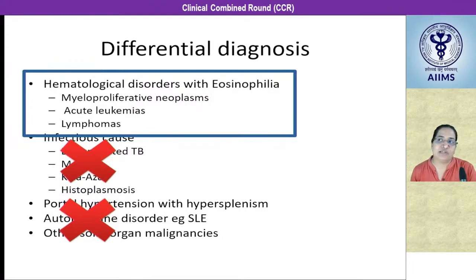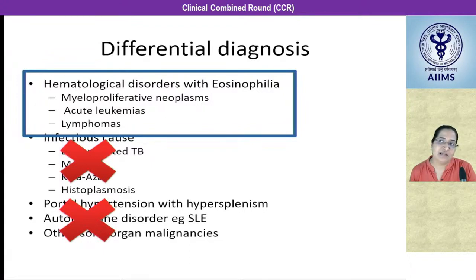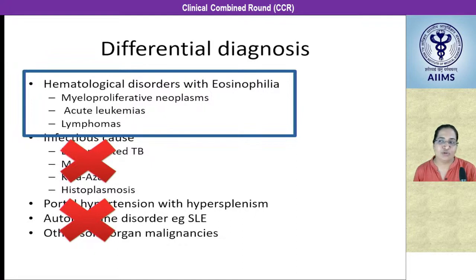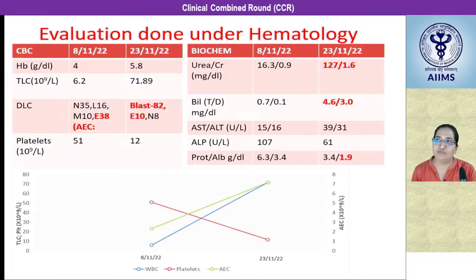Our main differential was a myeloproliferative neoplasm like chronic eosinophilic leukemia, systemic mastocytosis, or CML presenting with eosinophilia. The second differential was acute leukemias — AML with core binding factor mutations like inversion 16, or ALL with translocation t(5;14), which can also present with eosinophilia. The last differential was T-cell lymphoma or Hodgkin's lymphoma, where eosinophils are reactive to the underlying lymphoma. Based on these differentials, we compared CBC and biochemical parameters from 8th November to 23rd November.